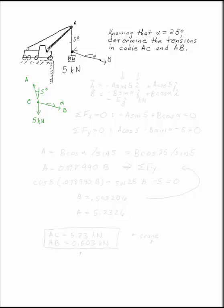The next thing to do is to write each of the forces in Cartesian form. So if we write A is minus A sine 5i, because it's in the minus i direction, plus A cosine 5j, B is minus B times sine alpha j, plus B cosine alpha i.